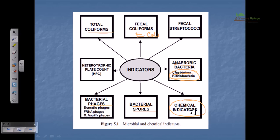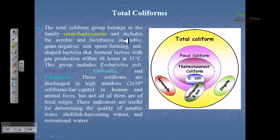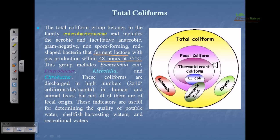Now let's talk about total coliforms. The total coliform group belongs to the family Enterobacteriaceae and includes aerobic and facultative anaerobic, gram-negative, non-spore-forming rod-shaped bacteria that ferment lactose — a very important point. They can form gas within 48 hours of incubation at 35°C, or within 24 hours at 44.5°C. This group includes Escherichia coli, Enterobacter, Klebsiella, and Citrobacter.